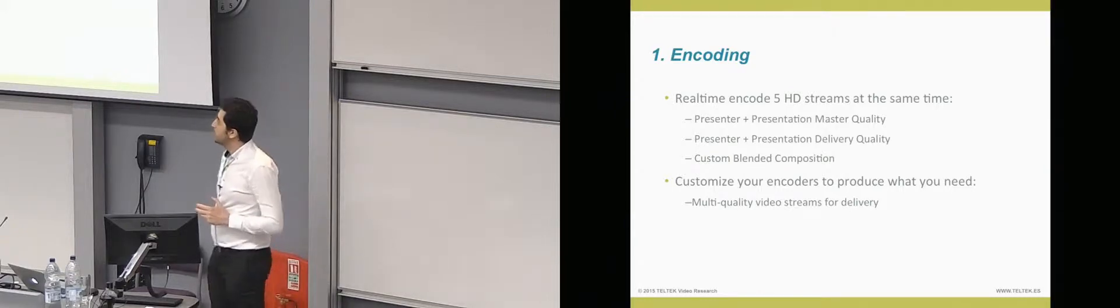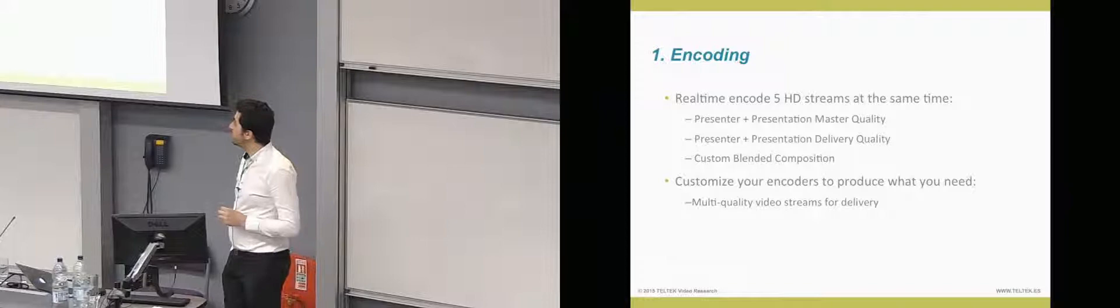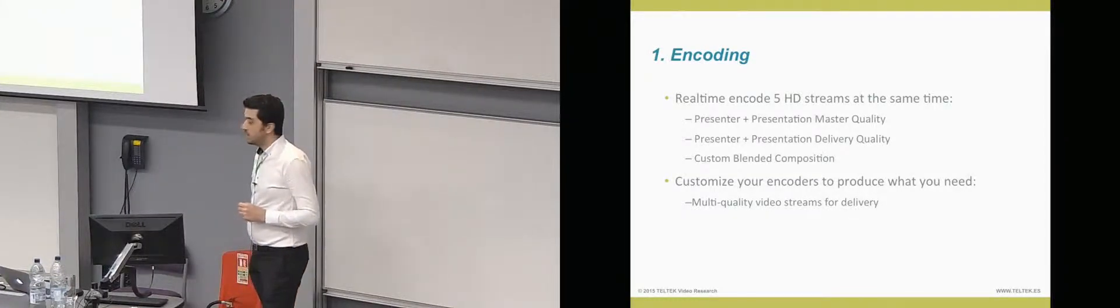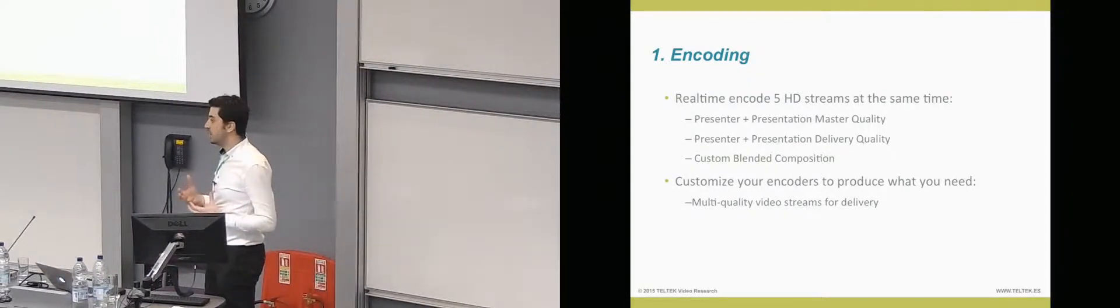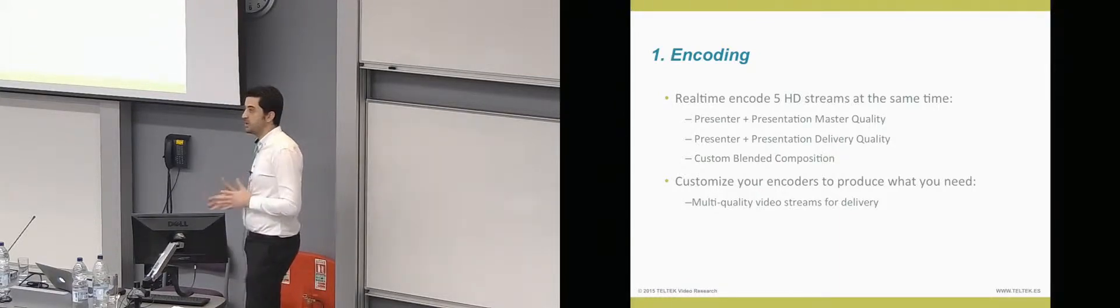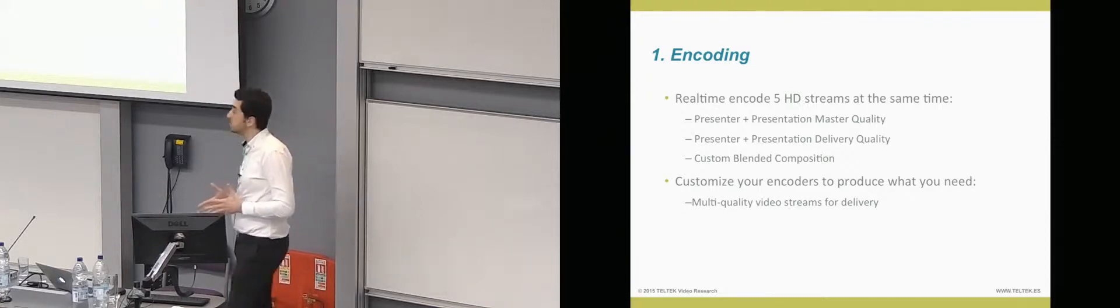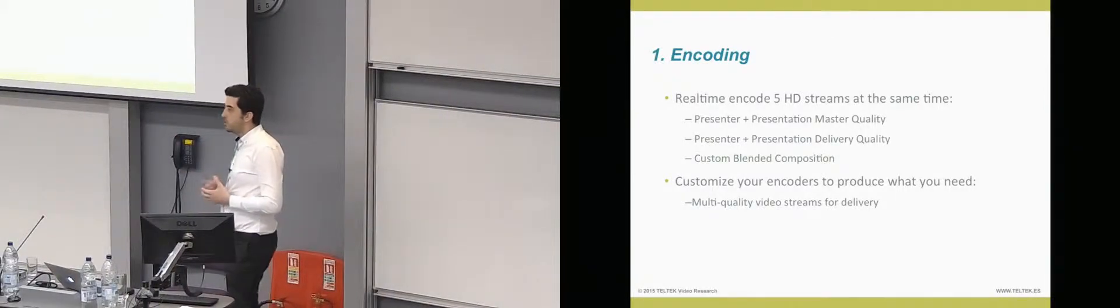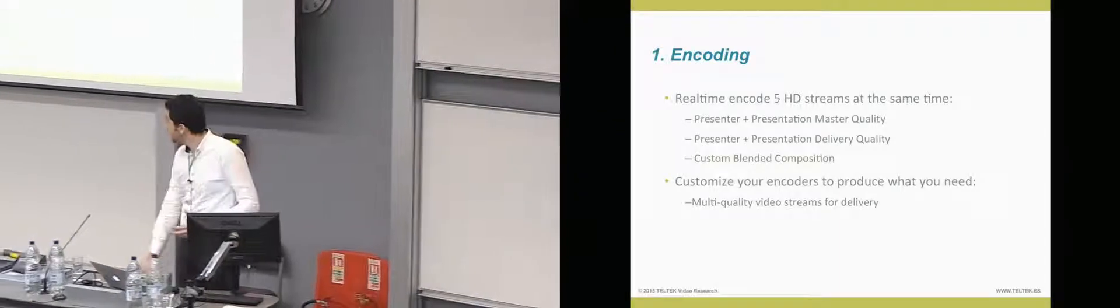So, the first task we work on was encoding. So right now, our capture agent is doing real-time encode of 5 HD streams at the same time. We are doing presenter and presentation with master quality. That's something you don't get in a regular workflow. That's a very high-quality capture that we're using for archiving. So we have to go back to a very high-quality source. We have it. A presenter and presentation delivery quality and a custom blend composition. This is being done in real-time. So we're capturing everything. We have those five flows there. You may change that. You don't need the master quality. You can produce whatever you need. So you may have already your multi-quality streams that you could be processing in Matterhorn later on. But you're going to do it first-hand here in the capture agent.